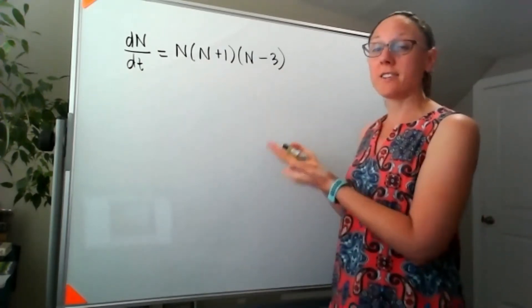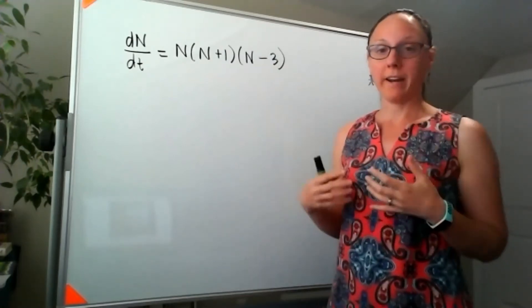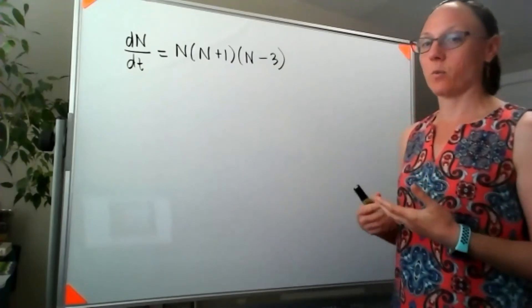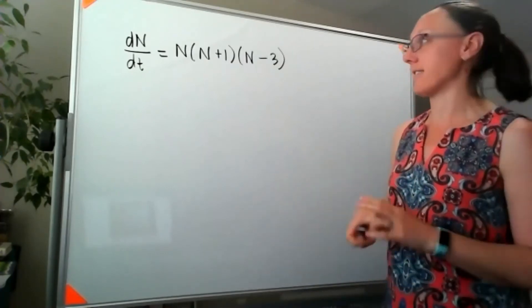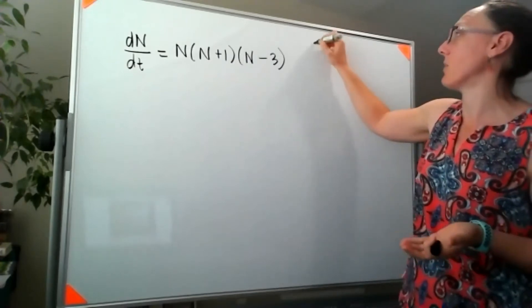We could solve this explicitly, but we're not going to talk about that until 7.4. But right now, two of the things that we might be interested in are to find the equilibria and to classify their stability.